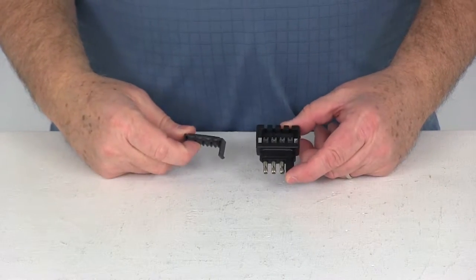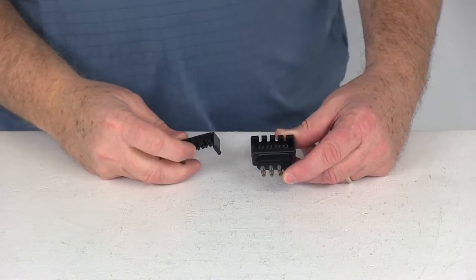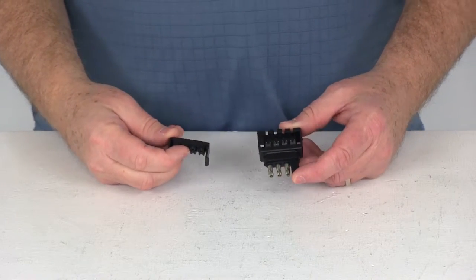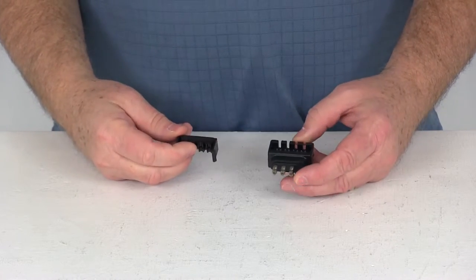Today we're going to review part number HMC20031. This is the Hopkins Quick Fix 4-Way Flat Trailer and Connector.